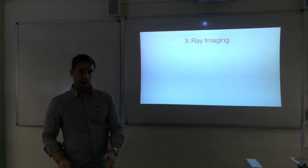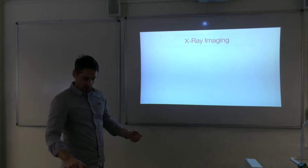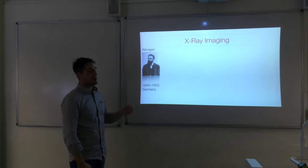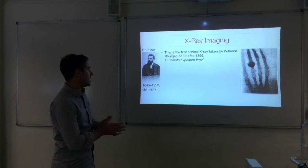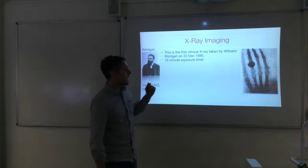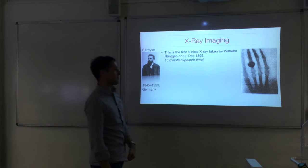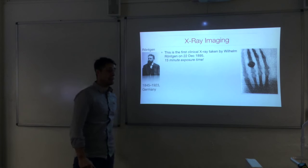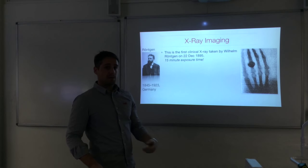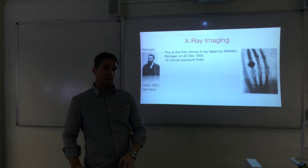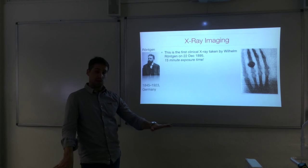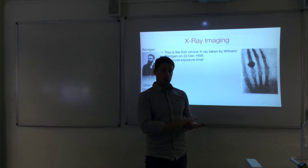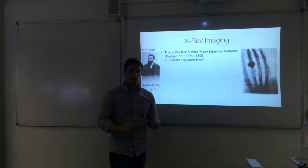Looking at x-ray imaging using conventional x-rays: the first person to collect an x-ray image was Wilhelm Röntgen, who x-rayed his wife's hand in 1895. That x-ray took 15 minutes to collect — a long time to keep her hand still, and a long exposure time to x-rays. We've moved on considerably since then, and you'll see methods by which exposure time has been reduced to fractions of a second.